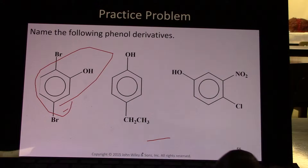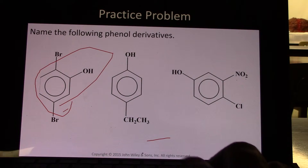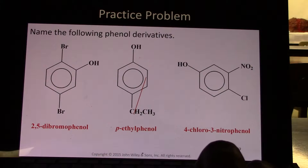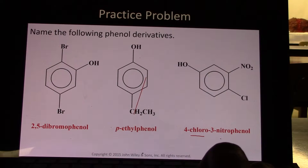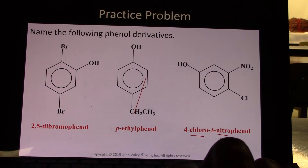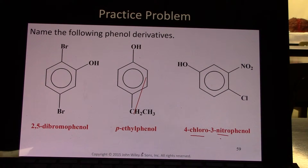And then here, on carbon 3 we have a nitro group, and on carbon 4 we have a chlorine. So 4-chloro-3-nitrophenol. Chloro went first before nitro because in the alphabet, C comes before N. So 4-chloro-3-nitrophenol.